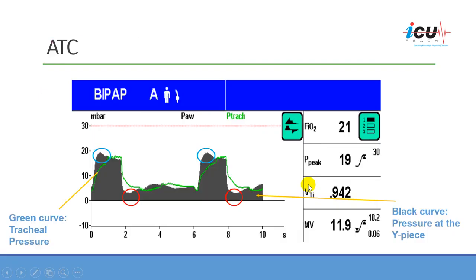In this graph you can see how the pressure support is variable within an individual breath. The pressure support rises to its highest level initially as the flow rate is high, and then as the flow rate decreases, the pressure support gradually decreases to meet the tracheal pressure. The green line represents the tracheal pressure and the black line represents the pressure at the proximal end of the tube.